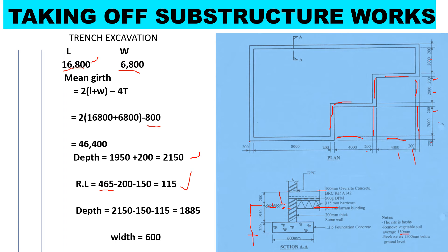We have already removed the 150mm vegetable soil and excavated the 115mm reduced level. Our trench depth is the total depth of 2150mm minus the vegetable soil and the reduced level, giving us 1885 millimeters. The width of the trench is 600 millimeters as given.